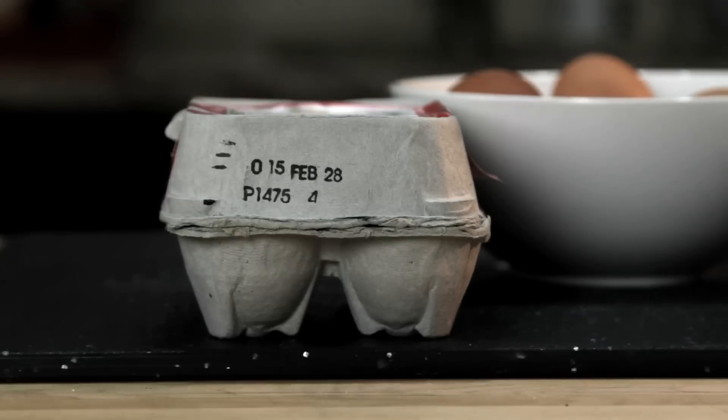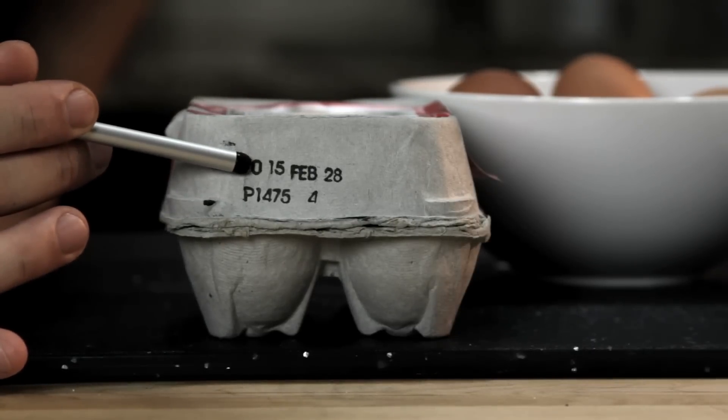There are two ways to tell how fresh an egg is. The first is to check something called the Julian date. As long as it's packed in the US, every carton of eggs has a number between 000 and 365 on it. And that number corresponds to the day on which the egg was cleaned and packed.